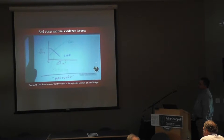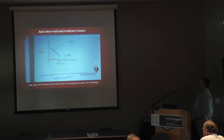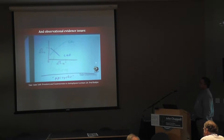That was the story of epicycles back in the Middle Ages. And then, of course, what it turned out is that the idea that the Earth was the center of the universe and the idea that everything goes in circles is just wrong. As soon as you abandon those two ideas and have the idea that the planets go in ellipses around the sun, all of a sudden everything gets much simpler and it's all explained.